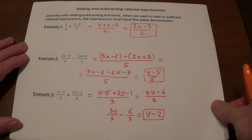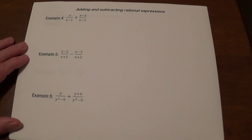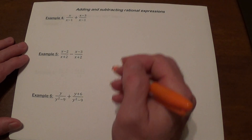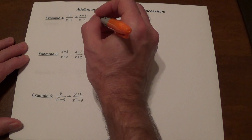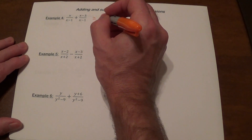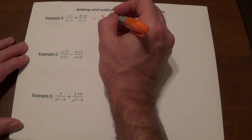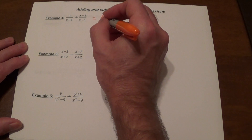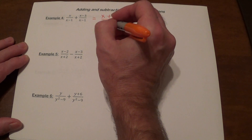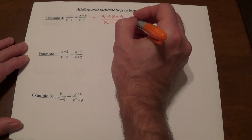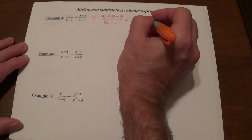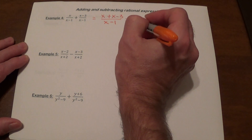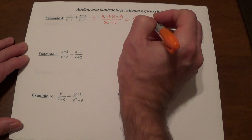Moving on — these problems now have algebraic denominators, not just a number, but the idea is the same. It's going to be x plus x minus 3, divided by x minus 1. That's going to give us 2x minus 3 over x minus 1.